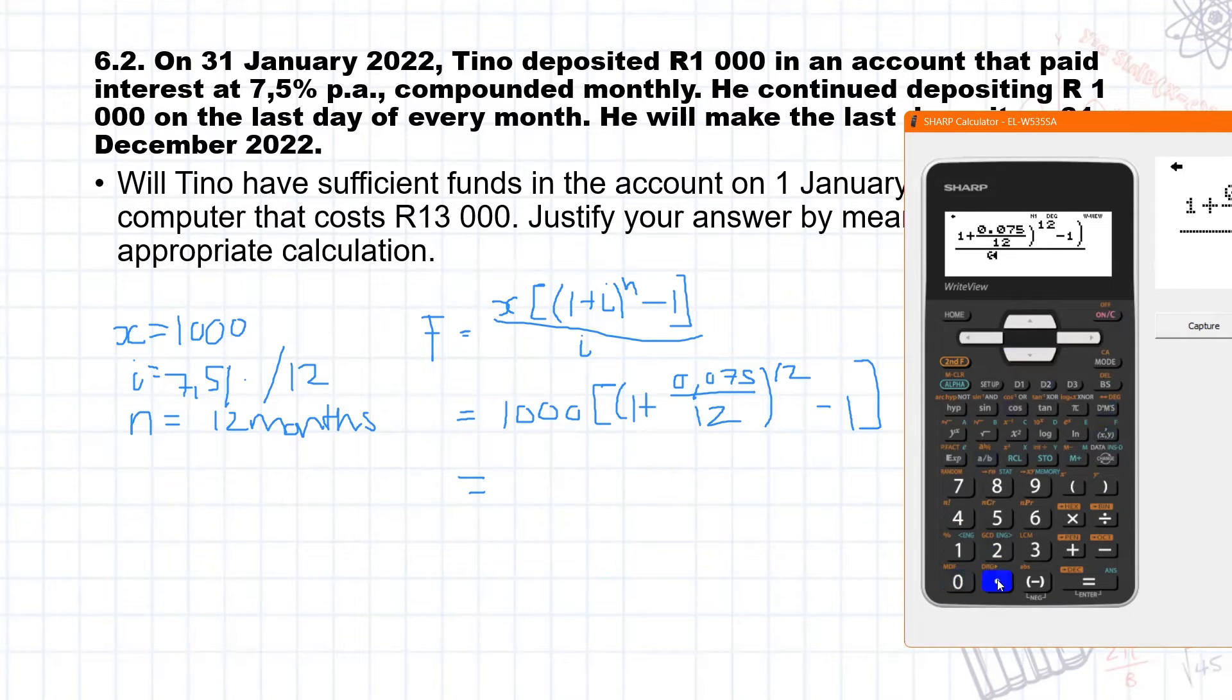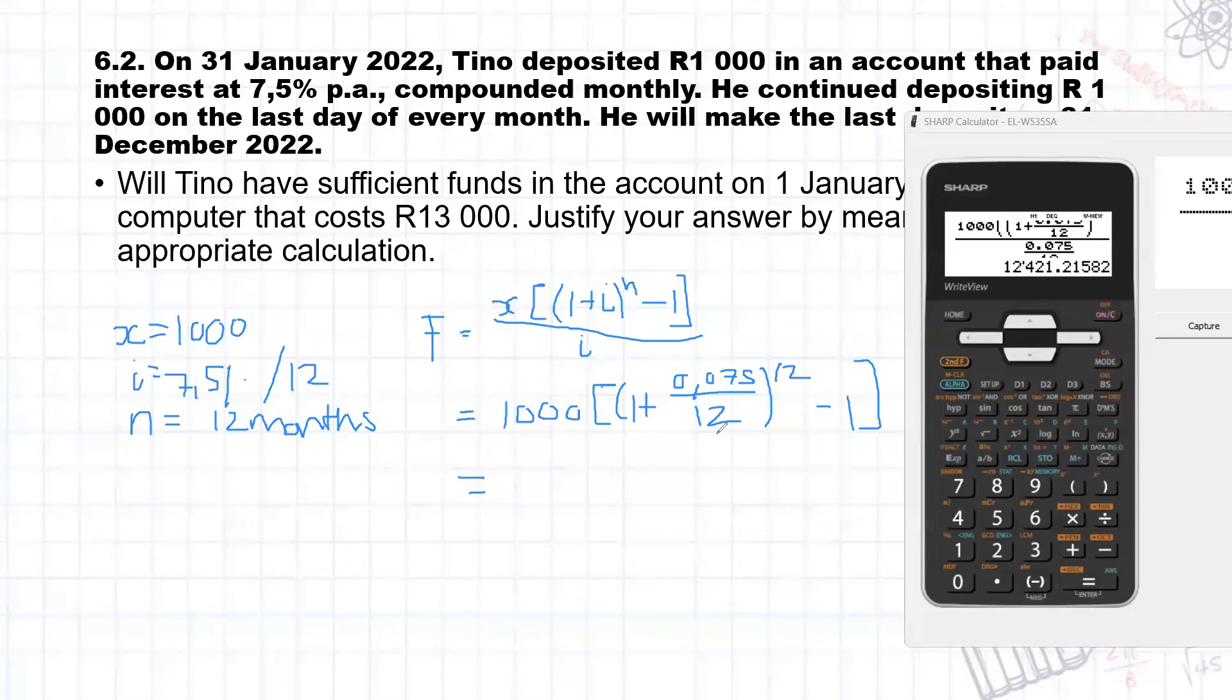And then 0.075 over 12. I see I haven't finished actually writing this formula down. So the answer is R12,421. So that is 0.075 over 12. So our final answer is R12,421.22.